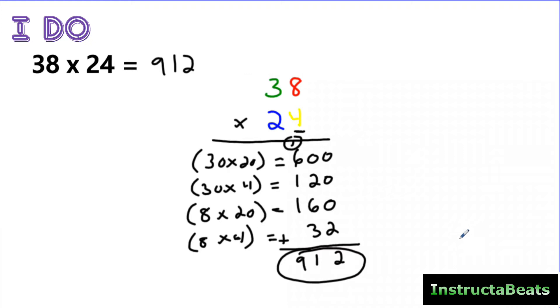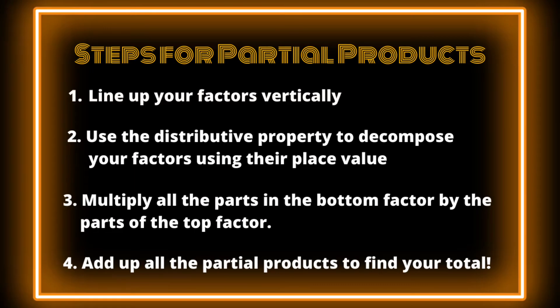Now you've seen it visually and you've seen what the math looks like. Let's name the steps. Step one: line up your factors vertically — that helps you transition to other ways to multiply more easily. Step two: use the distributive property to decompose your factors using their place value. Step three: multiply all the parts in the bottom factor by the parts of the top factor. Step four: once you get those partial products, add them all back together to find the total product.